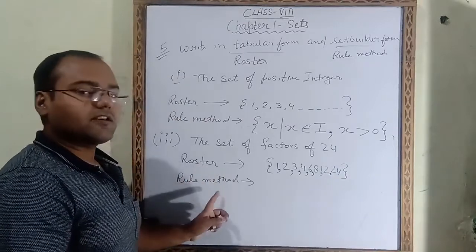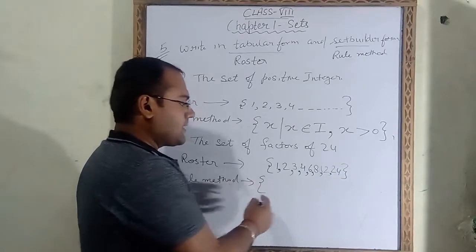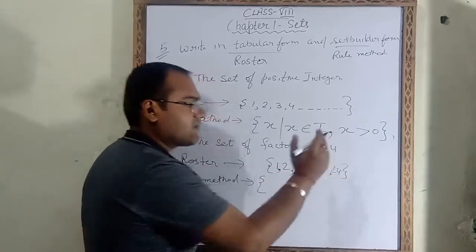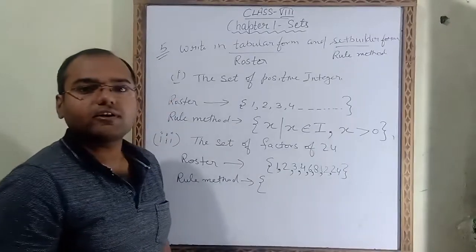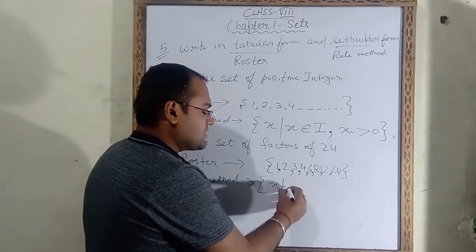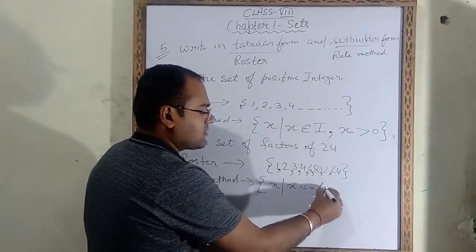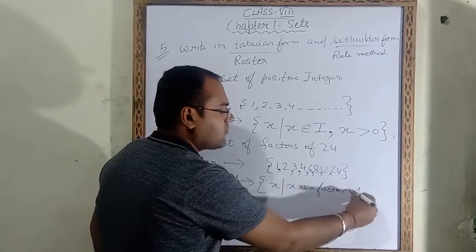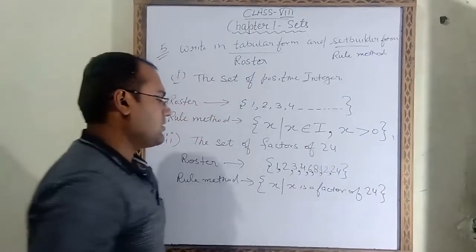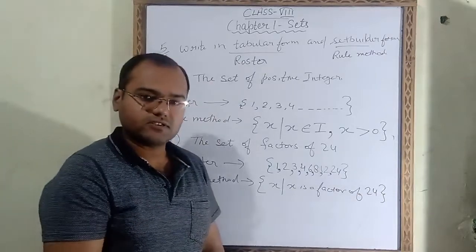Now we have to write the rule method. In the rule method we write the common property. The common property is that all these are factors of 24. So we write: { x : x is a factor of 24 }. Like this you have to do all parts of this question.